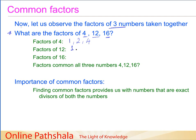The factors for number 12 would be: 1, 2 (since 2 sixes are 12), 3 (since 3 is a factor), 4 (since 4 is a factor of 12), 6 (since 6 is a factor of 12), and 12 itself is a factor of 12.